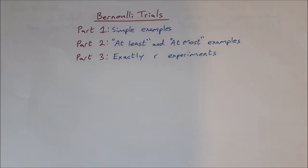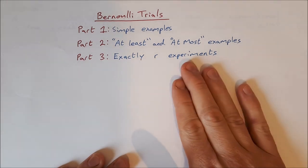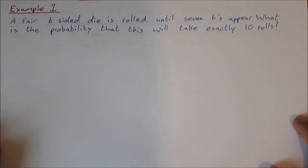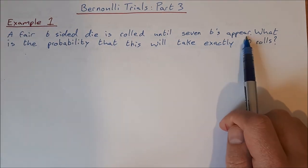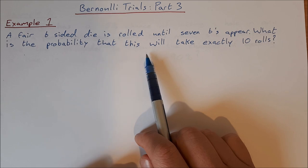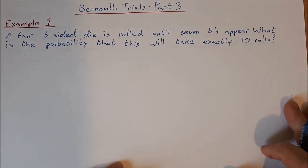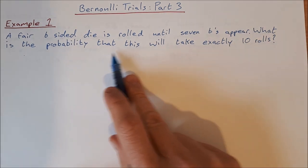Welcome to part three of our Bernoulli trials video series. This part looks at questions asking for exactly a certain number of experiments to happen. Let's take a look at a couple of examples. Example one: a fair six-sided die is rolled until seven sixes appear. What is the probability that this will take exactly ten rolls? This type of question takes Bernoulli trials a step further.